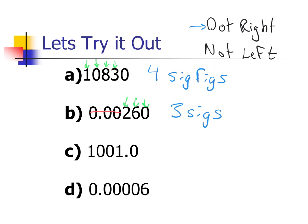The remaining practice problems should be fairly straightforward after the first two examples. Look at what you have: zeros between non-zeros follow the Oreo rule. Sometimes you get Oreos dipped in chocolate — that's a trailing zero to the right of a non-zero with a decimal. And the last one is actually your easiest, as it just has one significant digit.